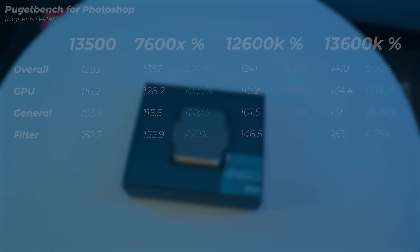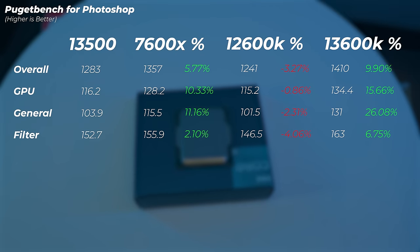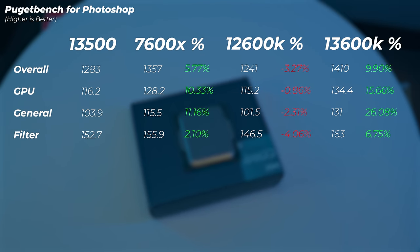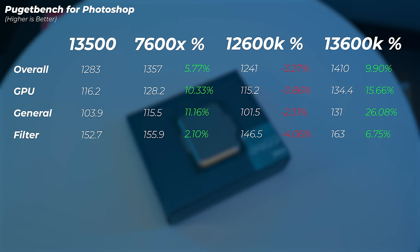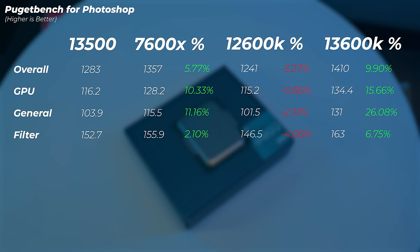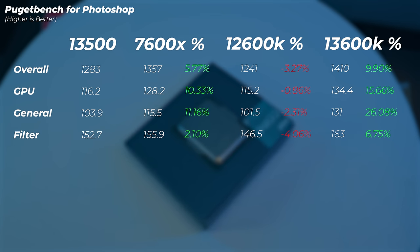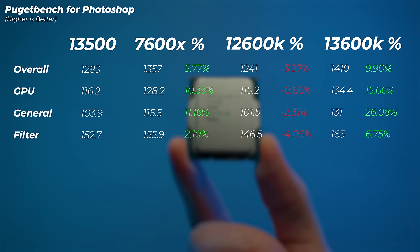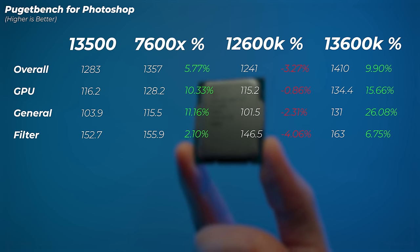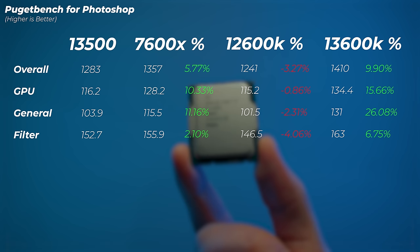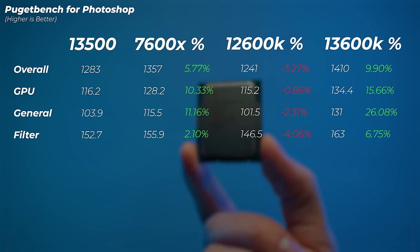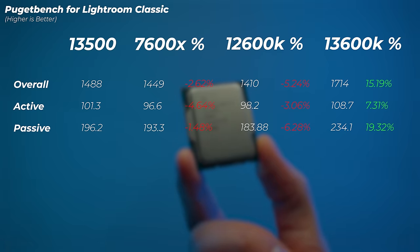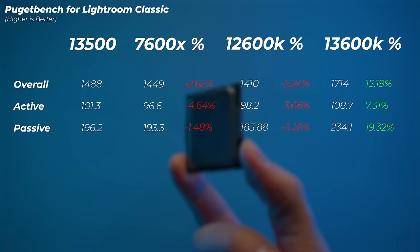In Photoshop, the 7600X is actually 5–11% faster depending on the task, because Photoshop loves very fast single cores and the 7600X excels there. The 12600K is about 3% slower — interesting because in Cinebench the 12600K was faster in single-core, yet here it's slower than the 13500. The 13600K is about 10–26% faster in Photoshop.